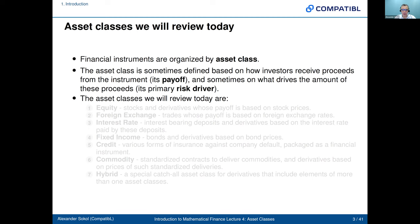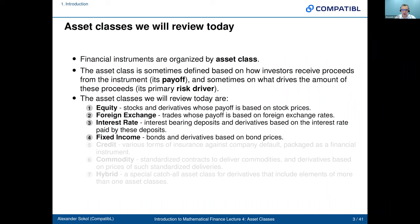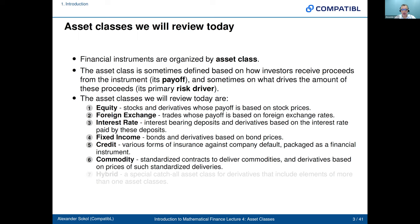The asset classes we'll review today are equity — stocks and derivatives whose payoff is based on stock prices — foreign exchange, trades whose payoff is based on FX rates, interest rates, interest-bearing deposits and derivatives based on those rates, fixed income, bonds and derivatives based on bond prices, and credit — various forms of insurance against company default packaged as a financial instrument. We'll also talk about commodity, standardized contracts to deliver commodities and derivatives on those prices, and finally hybrids — a catch-all class for derivatives that include elements of more than one asset class or cannot be cleanly slotted into one category.